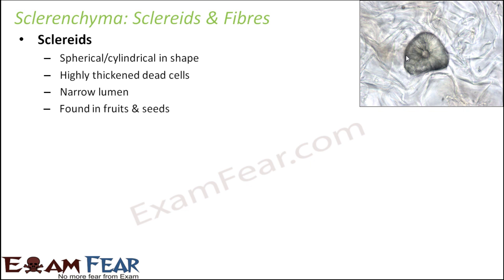The cell walls are very, very thick. Here you can see this entire portion is the cell wall, and at the center this region is nothing but the lumen. Pits are somewhere here — small pore-like or channel-like structures. So the center region is the lumen and this entire thickened structure is the thick cell wall. They have a very narrow lumen — when you compare it with the thickness of the cell wall, it is really, really narrow. Sclereids are found in fruits and seeds, which are generally tough and hard.